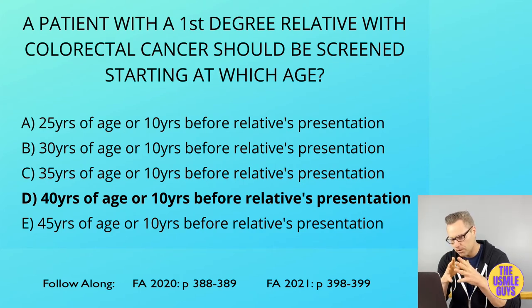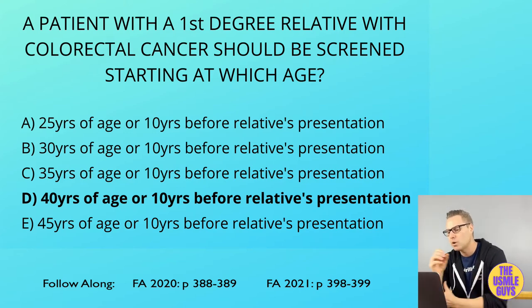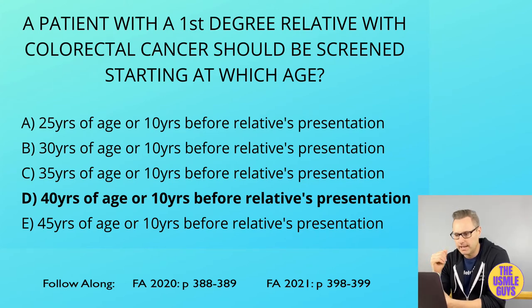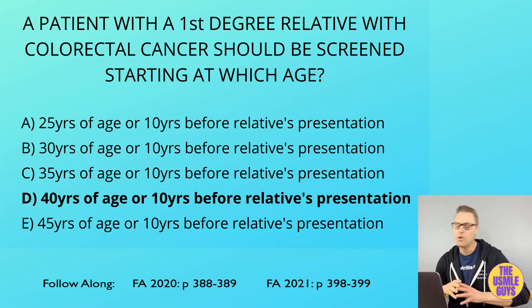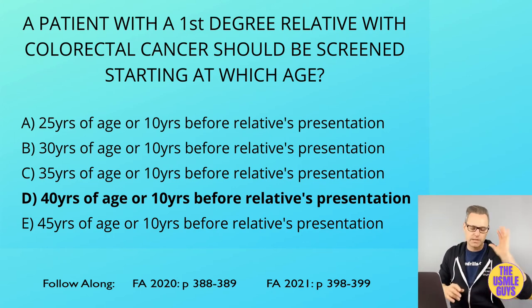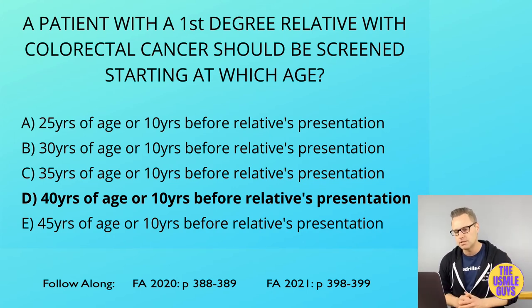When it comes to colorectal cancer, most patients are over 50 years of age at the time of diagnosis, and around one in four who get diagnosed have a family history — that's why it's so important to look for a family history of colon cancer. For a patient with average risk, meaning no first-degree relative affected, we typically start screening at 50 years of age via colonoscopy, which is your best screening tool.